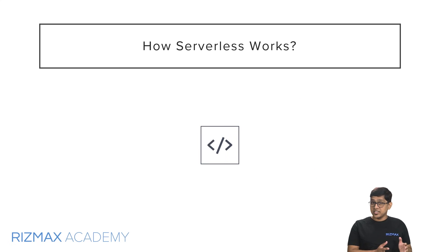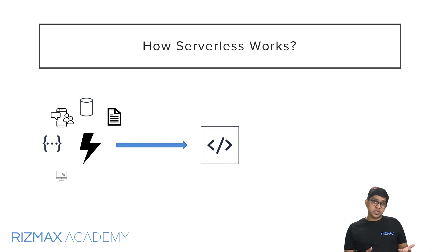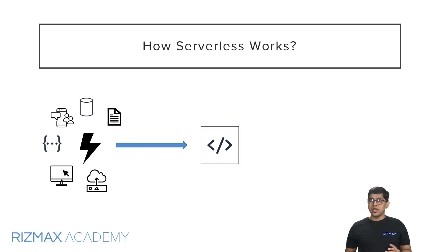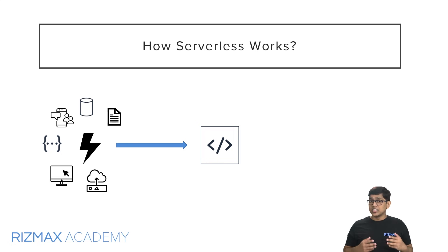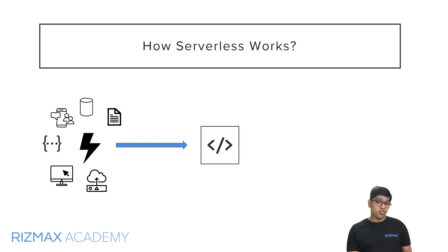With serverless, you write your code in the form of functions, just like you would in any programming language, and these functions run in the cloud. You segregate your application logic into small independent functions or microservices and upload them to the cloud provider. These functions are stateless and can be invoked in response to different events — file uploads, database updates, in-app activity, API calls, website clicks, sensor outputs from IoT devices, and so on — all without having to manage any infrastructure or worry about performance and availability.